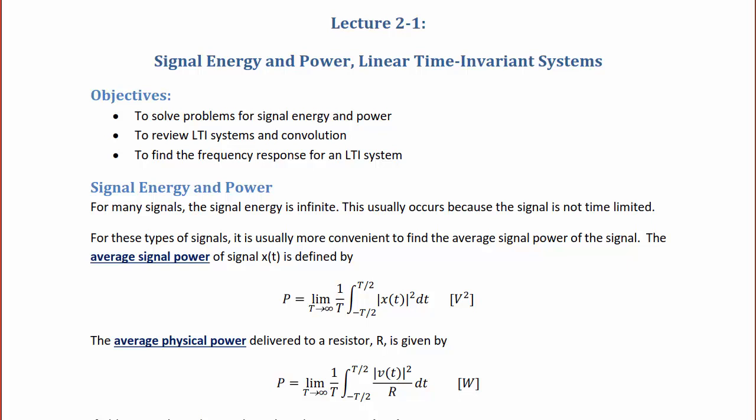Signal energy and power: for many signals the signal energy is infinite. This usually occurs because the signal is not time limited — time limited means it's only nonzero for some specific period of time. For these types of signals it is usually more convenient to find the average signal power. The average signal power of signal x(t) is defined as P equal to the limit as T goes to infinity of one over T, the integral from negative T/2 to positive T/2 of the magnitude of x(t) squared dt, and the units are volts squared.